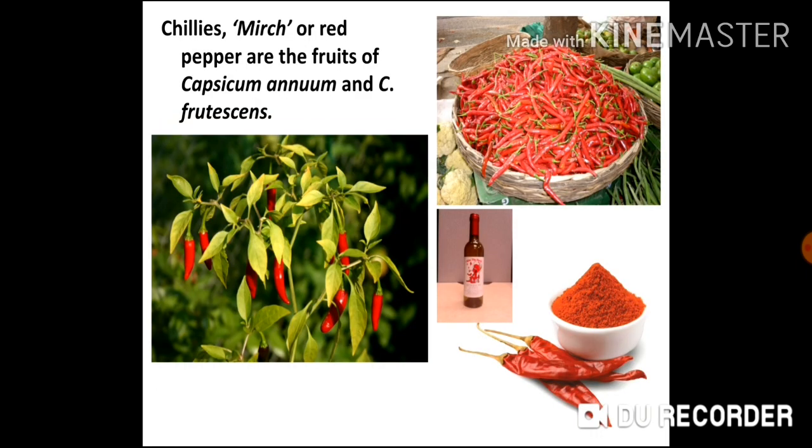The next food plant is chilli, mirch, or red pepper, botanically Capsicum annuum and Capsicum frutescens. Fruits are dried, ground into fine powder, and added for flavor to curries. Chilli has its origin in Mexico. Another use shown in the picture is that Virginian wine is also prepared from chilli.